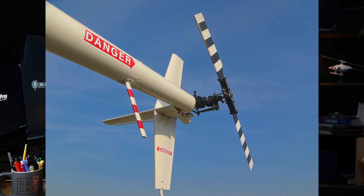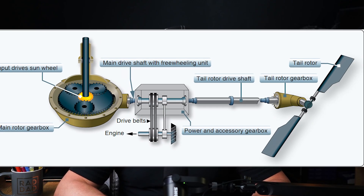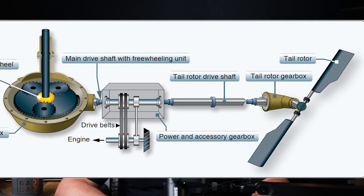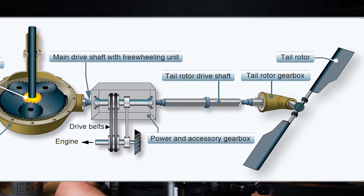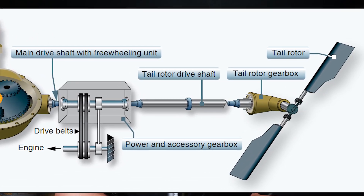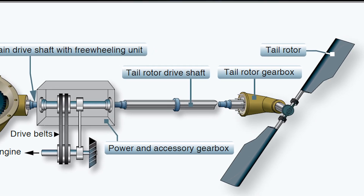Medium-frequency vibrations, on the other hand, are often associated with tail rotor or drivetrain components, typically in the range of 5-20 Hz. These vibrations might feel like a humming or buzzing sensation. Some common causes for medium-frequency vibrations are tail rotor imbalance or misalignment, and issues in the drivetrain such as misaligned shafts or worn components.